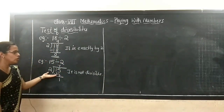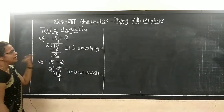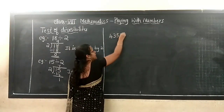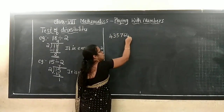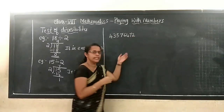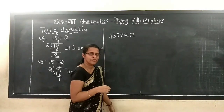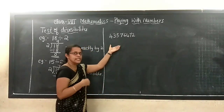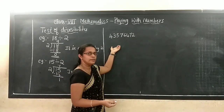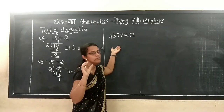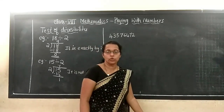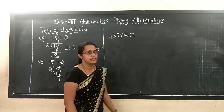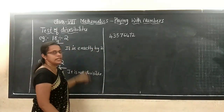This is not so time consuming. But if I take one more example — a large number like 4, 3, 5, 7, 6, 4, 7, 2 — whether it is divisible by 2, then if you want to do it by division it is a tedious process. So you have to find some shortcut methods. Today in this class, let us learn some shortcut methods — that is nothing but the test of divisibility.